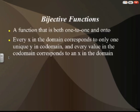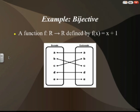A bijective function is a function that is both one-to-one and onto, satisfying requirements for both. Every x in the domain corresponds to only one unique y in the codomain, and every value in the codomain corresponds to an x in the domain. For example, f(x) equals x plus 1, defined from all reals to all reals — every domain value has a unique codomain value (making it one-to-one), and every codomain value has an input value (making it onto). So this function is bijective.